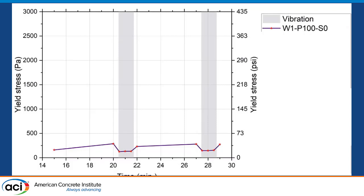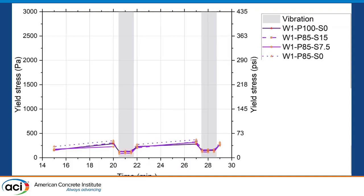These are the results. Just cement paste has a yield stress of about 150 to 250 Pascal. When you vibrate it, it comes down to about 100 Pascal, then recovers when you stop vibration.